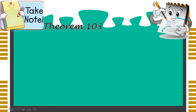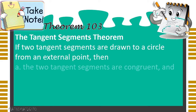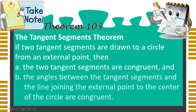First of all, what is theorem 103 or the tangent segments theorem? If two tangent segments are drawn to a circle from an external point, then we can conclude two ideas. First, the two tangent segments are congruent. And second, the angles between the tangent segments and the line joining the external point to the center of the circle are considered congruent as well.